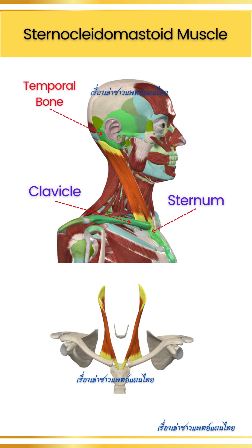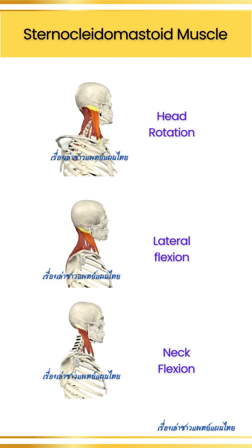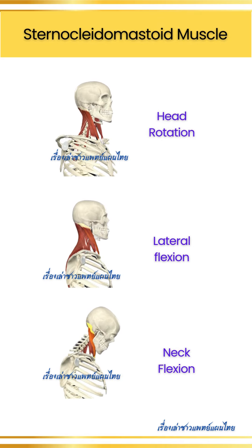Sternocleidomastoid: this long and thick muscle originates from the sternum and clavicle, and inserts at the mastoid process of the temporal bone, just behind the ear. It helps with head rotation, lateral flexion, and neck flexion.